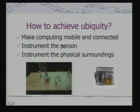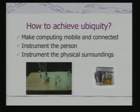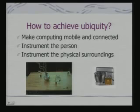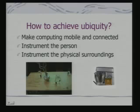How do you achieve ubiquity? Basic technology-wise: make computing mobile and connected. All the devices we have talked about are mobile devices in some sense, and if they have networking capability they can be connected. For example, a coffee-making machine can have a computer inside which can be connected — you type in your code and it can prepare coffee with the correct mix and the correct amount of sugar you would like.